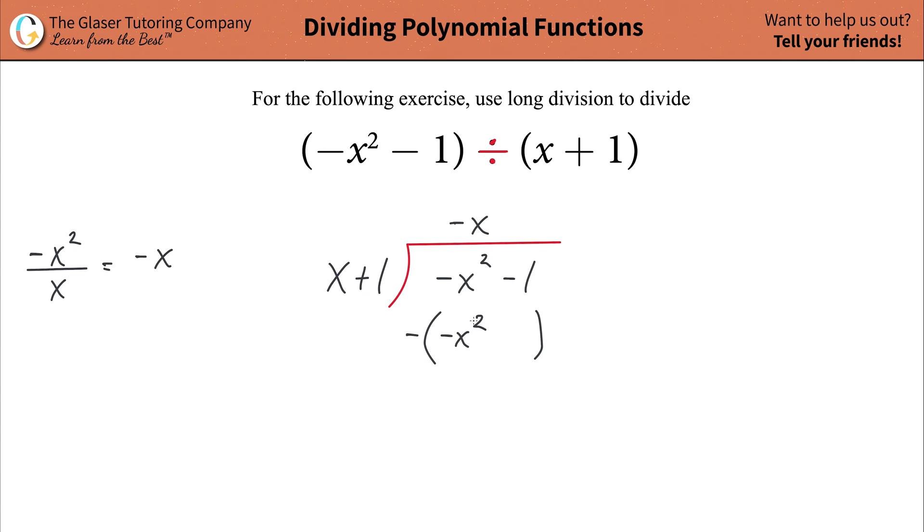And by the way that should always work. If you did this correctly, whatever this term is should match this term at the moment, not when we take into account the negative sign though. Then take that negative x and multiply it by the positive one and that works out to be just negative x.